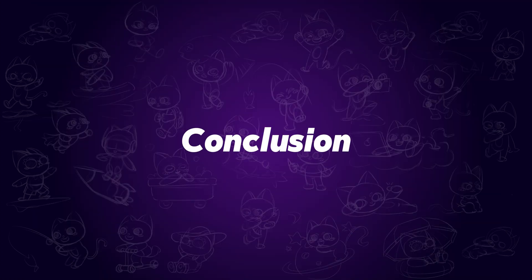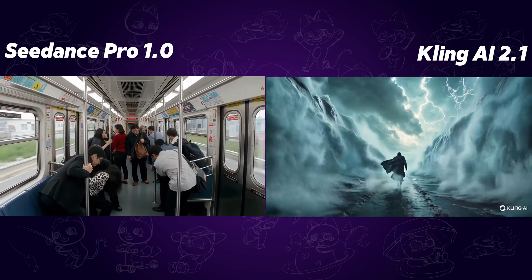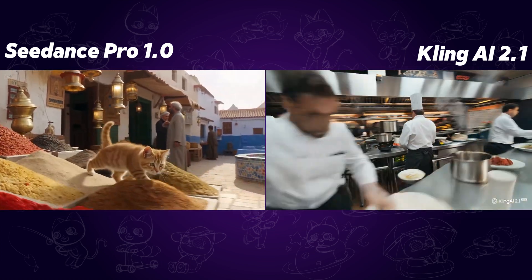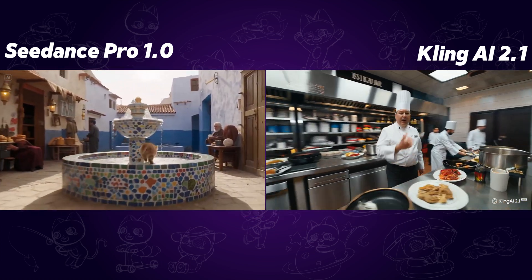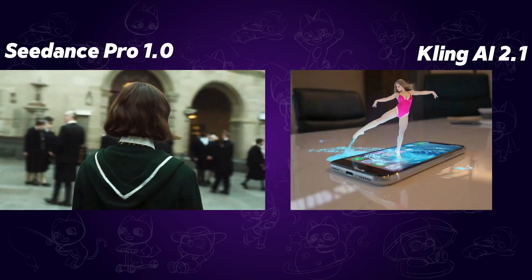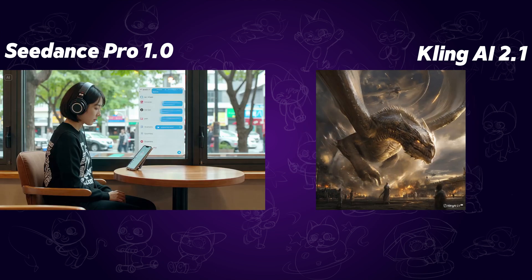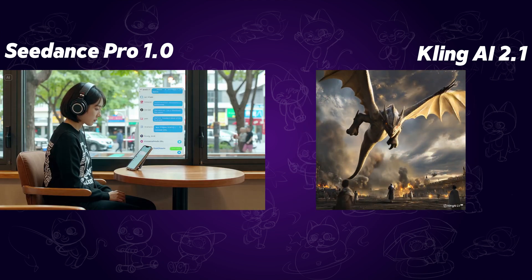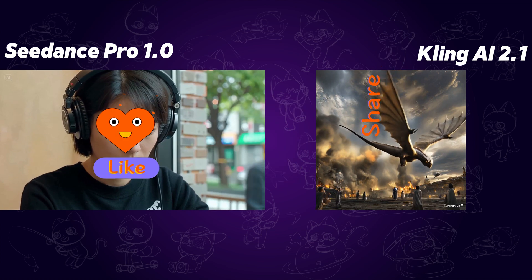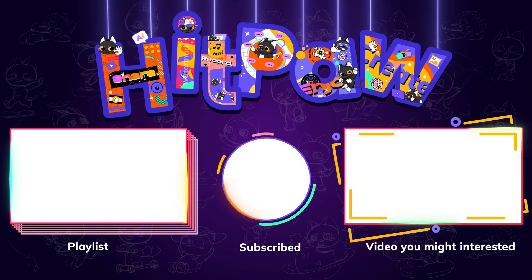Conclusion: If you're looking for something that feels like it came straight out of a Pixar movie, go with Kling. But if you're making short videos set to music and want maximum style control, C-Dance might be your best bet. Which one do you prefer? Let me know in the comments, and don't forget to subscribe for more hands-on AI tool reviews.